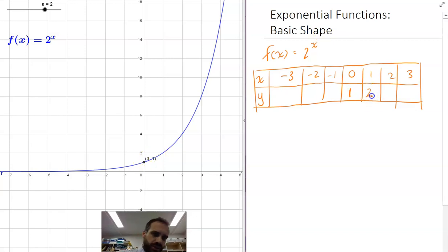2 to the 1 is 2, 2 to the 2 is 4, and 2 to the 3 is 8. And you can see that as the x's go across by 1, these numbers are doubling.